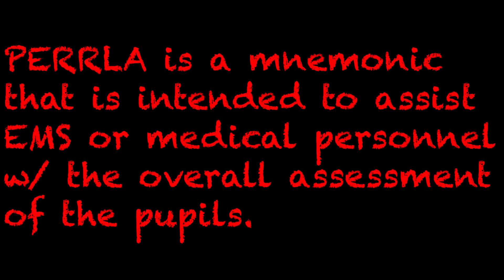The P stands for pupils. The iris is the colored part of your eye, and the dark part in the middle is the pupil. The pupil controls how much light gets let into the eye by constricting or dilating. The E stands for equal, meaning that both of the pupils are equal.